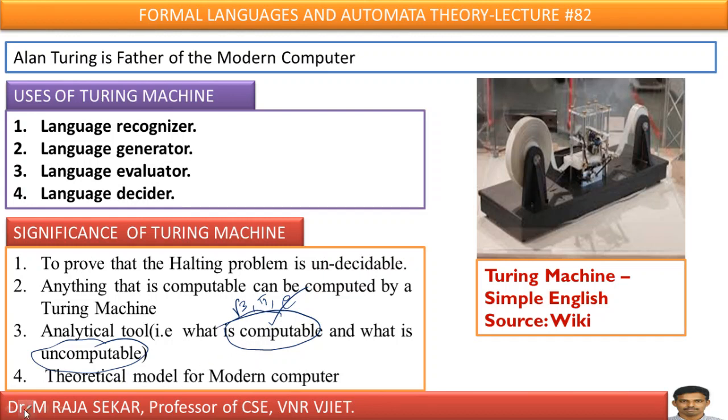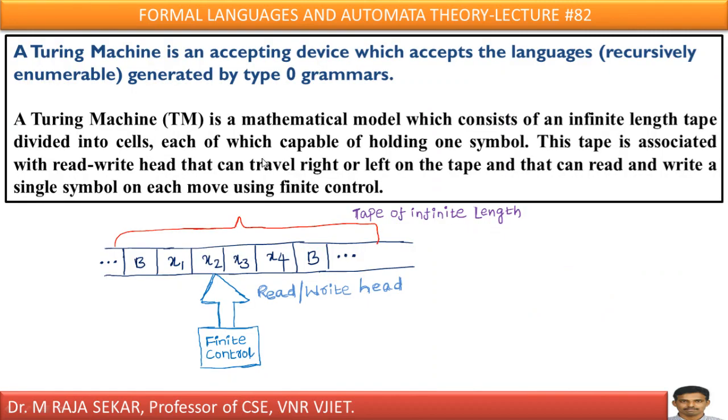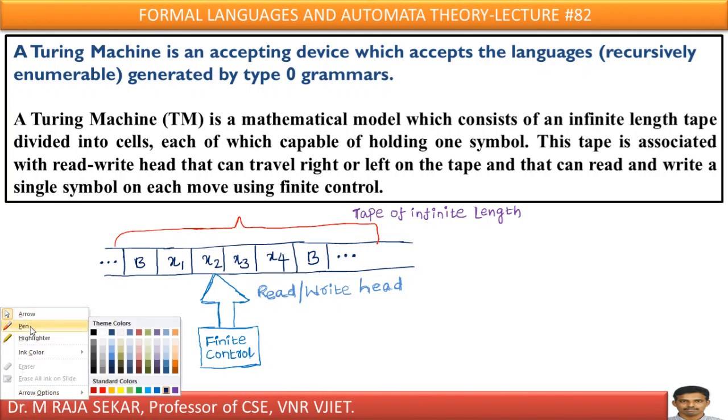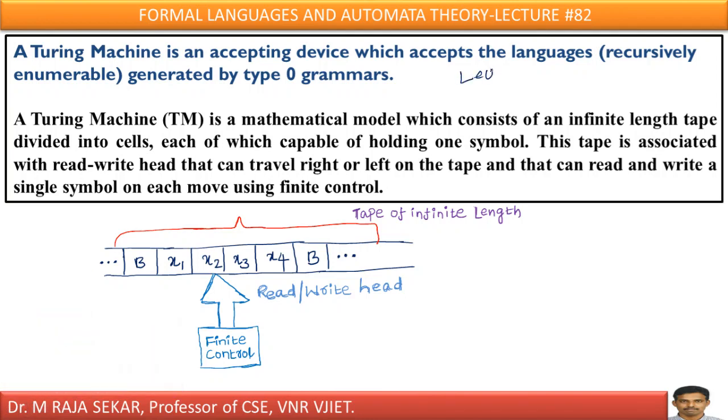I can say Turing machine is theoretical model of modern computer. Here, this image I collected from Wikipedia, just you can see the Turing machine for simple English language. Now, let me define what is Turing machine. Just try to refer my lecture number 13. In lecture number 13, I explained hierarchy of languages, hierarchy of grammars, otherwise type 0, type 1, type 2, type 3, like that. Just, if possible, try to refer that lecture once.